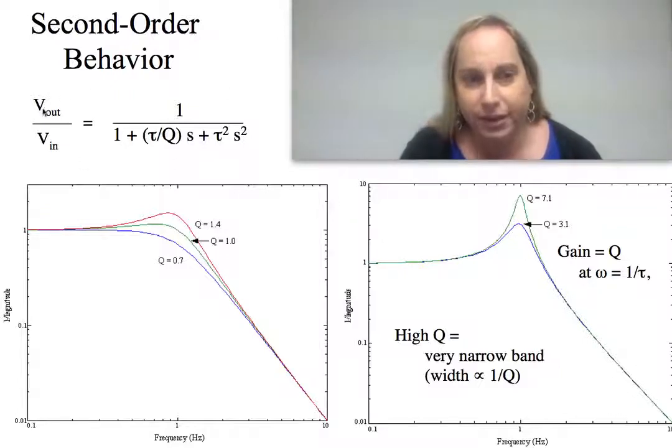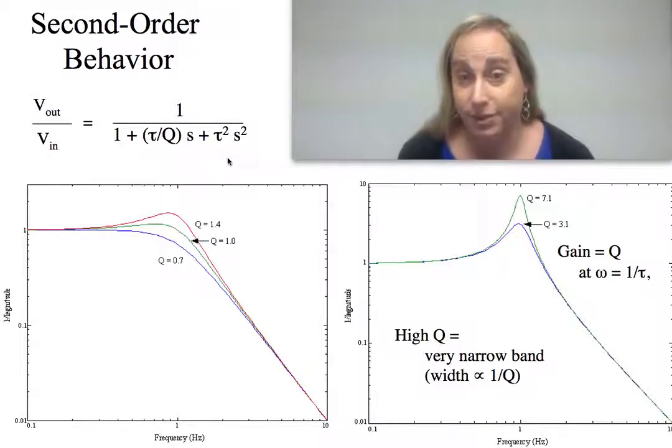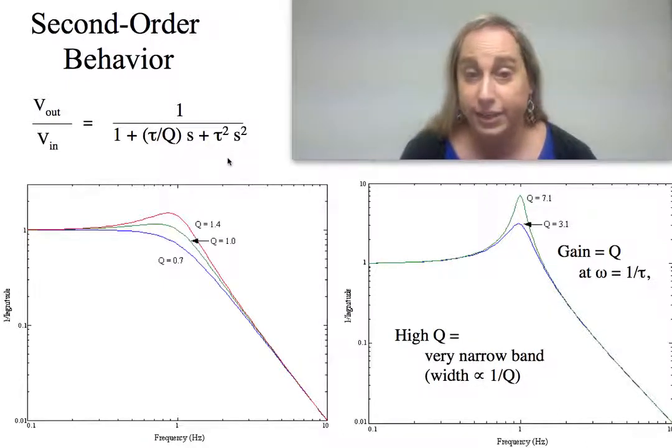When I talk about second-order low-pass structure—and I'm just going to look at the low-pass—we have 1 over 1 + (τ/Q)s + τ²s² because it's a second-order system. If it's a simple system, let's say I had one first-order and another first-order cascaded,